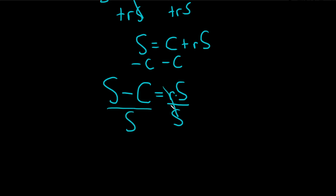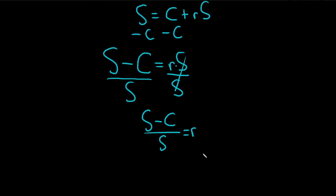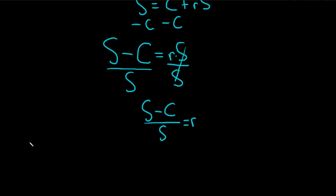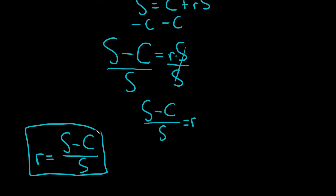Whoops — canceled the wrong thing. There we go. So s minus c over s equals little r. You could leave your answer like this, but it's better to write little r on the left. So the final answer is r equals s minus c over s.